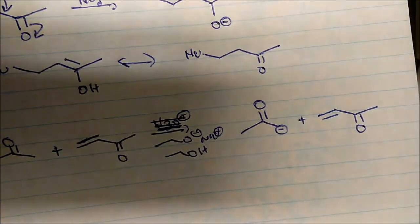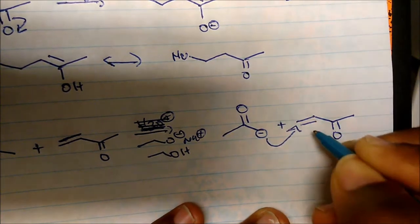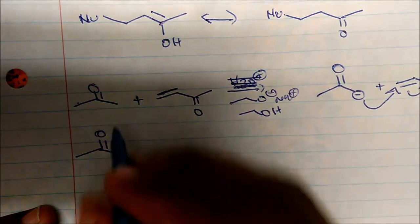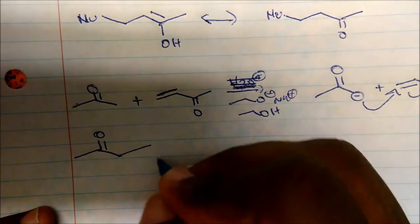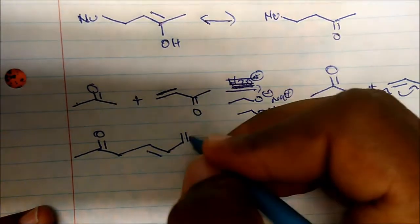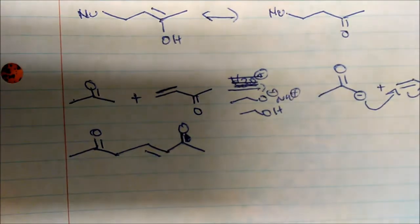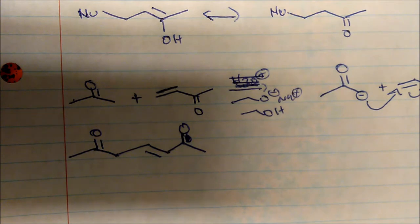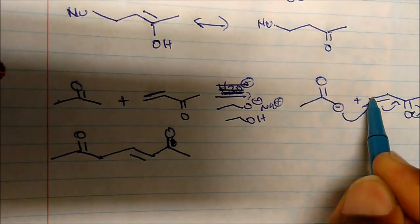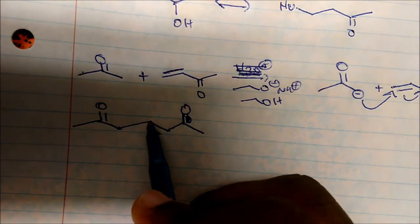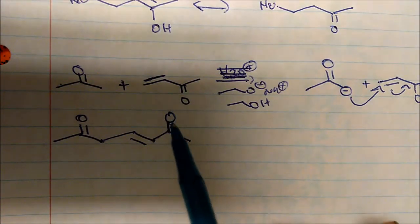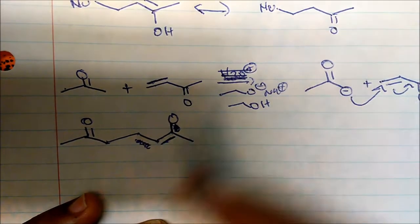The enolate attacks the terminal carbon of the conjugated ketone. We form a bond there and a negative charge on the oxygen. Looking at the resulting molecule, the negatively charged carbon is now bonded to the terminal carbon, which has a double bond adjacent to a negatively charged oxygen. This carbon is bonded to the terminal carbon, which has this additional carbon attached.